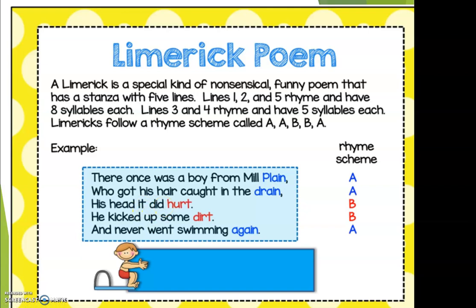So you have to remember: how many lines in a stanza? Five. You have to have the rhyme scheme A-A-B-B-A. They are nonsensical and funny — remember to always be kind, but they are funny. And we have eight syllables on lines one, two, and five, and five syllables on lines three and four.